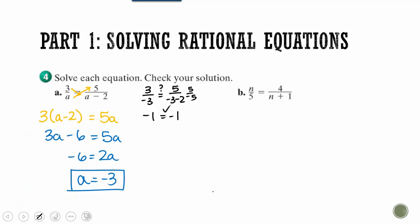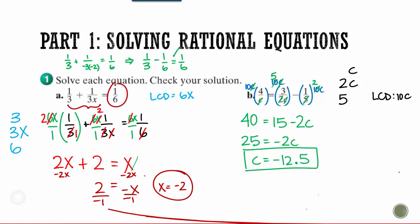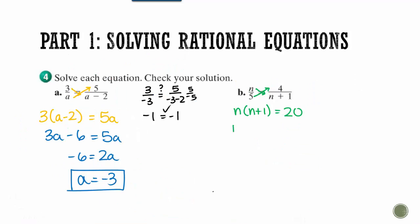Now this problem here is as hard as they are going to get. We'll find our cross products. So I'll have N times N plus 1. And that equals 5 times 4, or 20. And when I distribute this, I end up with a quadratic. I cannot solve this by doing opposite operations. Instead, I have to choose one of our four methods to solve. Completing the square, quadratic formula, factoring, or square rooting.